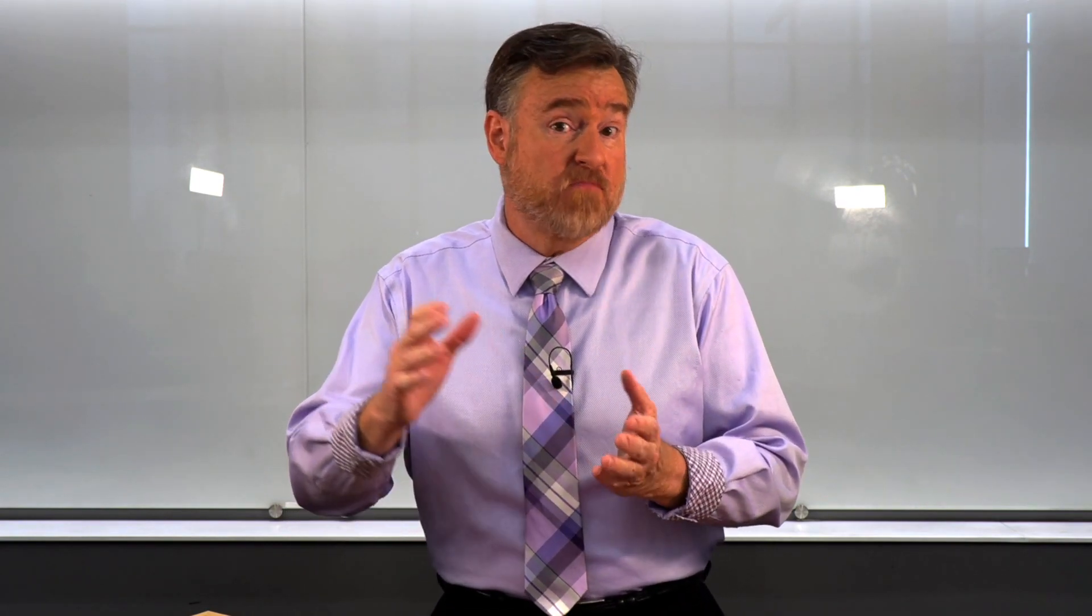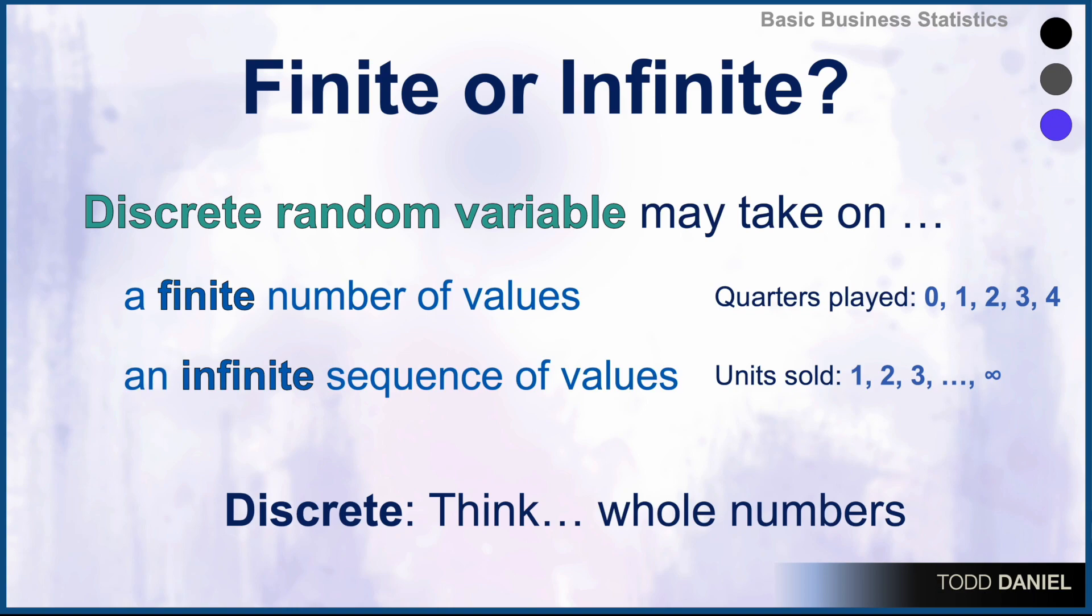On the other hand, sometimes the answer could range, at least theoretically, to infinity. And this is called an infinite random variable. Infinite random variables take on an infinite sequence of values. How many units did you sell? Zero, one, two, three, which could theoretically go up to infinity.